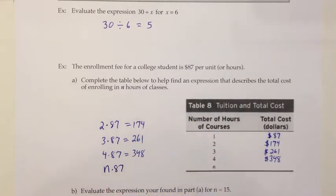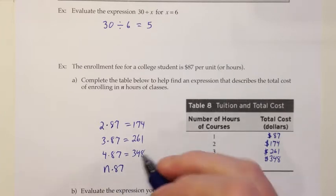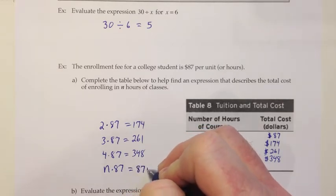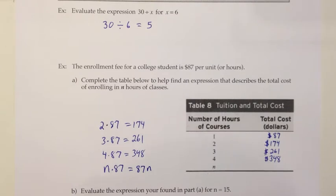I can't say what that's equal to here because I don't know the value of n, but I can still write an expression for it. Usually when we have an expression that has a variable and a number, we put the number first. So I'm going to switch that around and call it 87n, and then I'll fill that in right here.